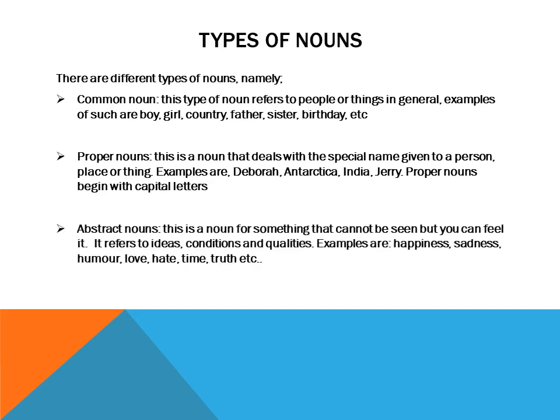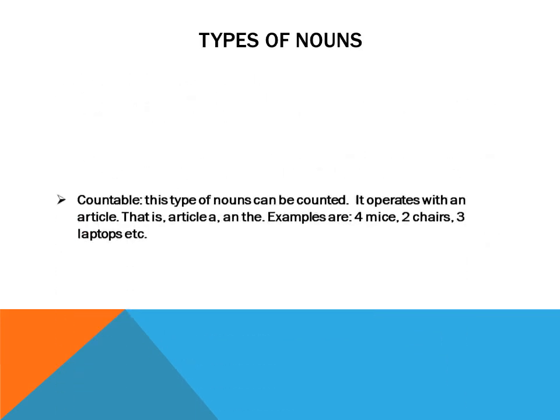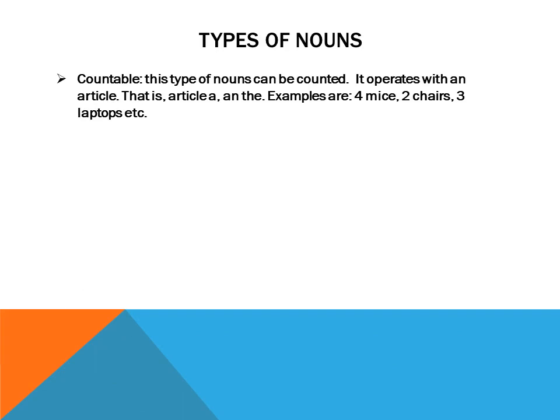We also have abstract nouns. This is a noun for something that cannot be seen but you can feel it. It refers to ideas, conditions, and qualities. Examples include happiness, sadness, humor, love, hate, time, and truth.